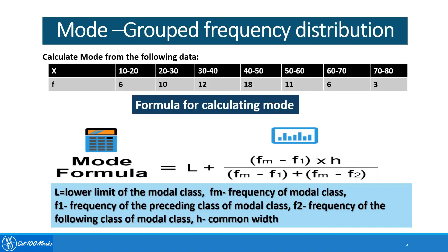How do we calculate mode for a grouped frequency distribution? We use the formula which is given here. The formula is L plus (Fm minus F1) times h divided by (Fm minus F1) plus (Fm minus F2).